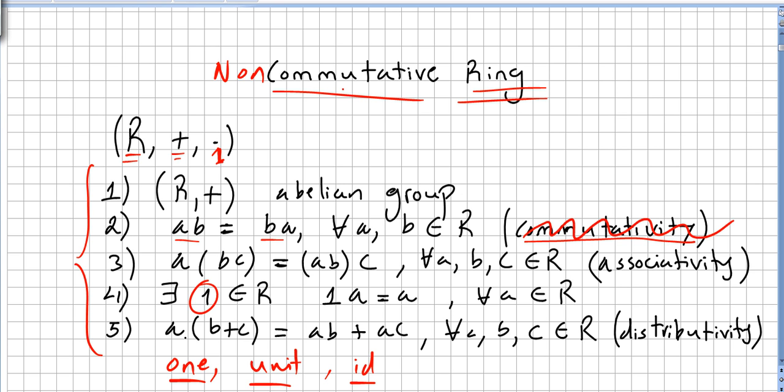So if you have a non-commutative ring, you have to take this second axiom out. But obviously, doing that, you have to change some other things here. For instance, here for the identity.